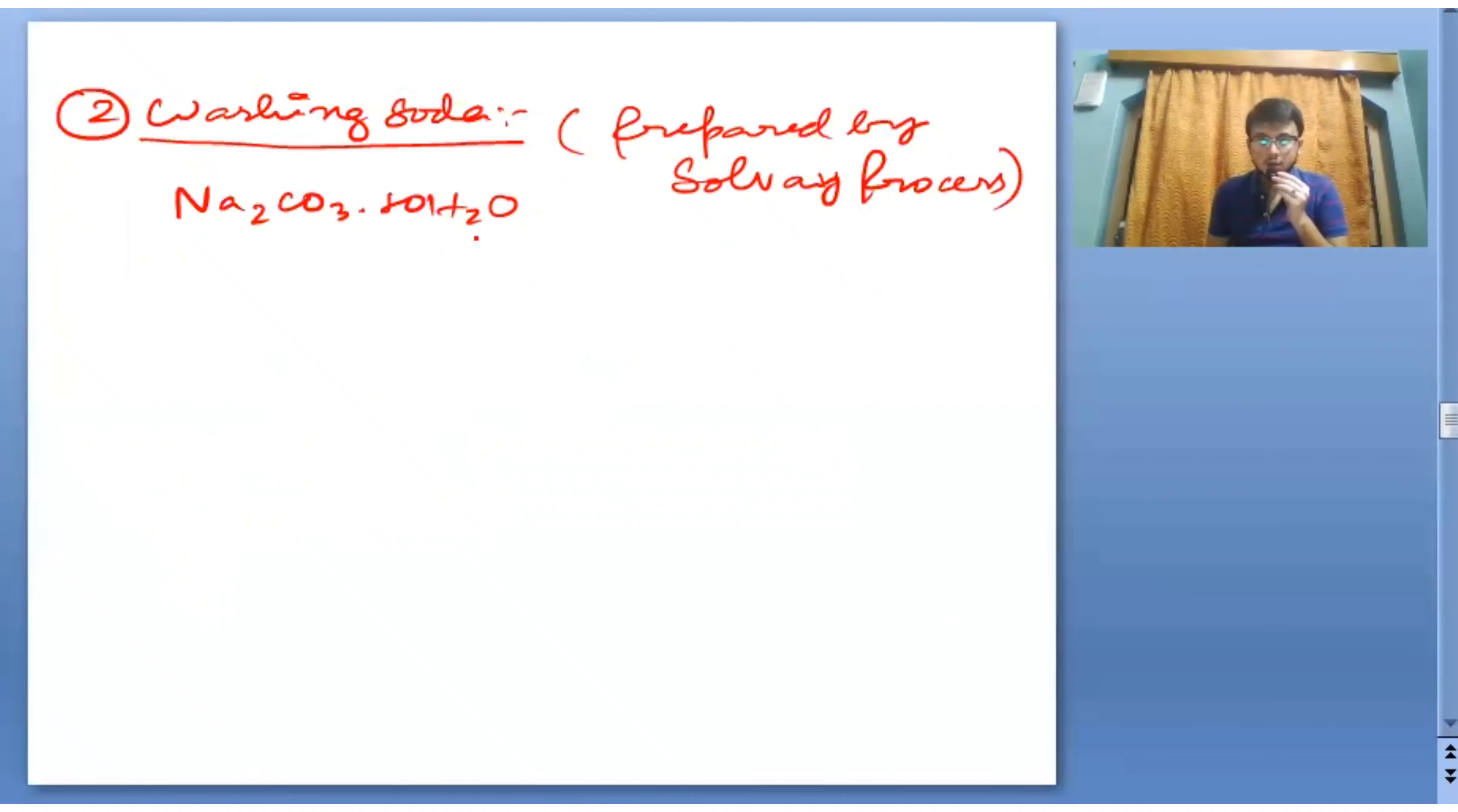Next is washing soda. It is prepared by Solvay process and its formula is Na2CO3·10H2O. If we heat at 375 Kelvin temperature, it becomes a monohydrate. And if we heat above 375 Kelvin temperature, it becomes anhydrate and forms soda ash.